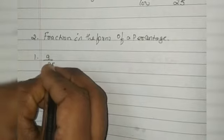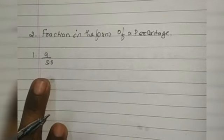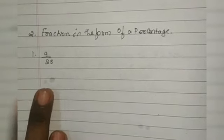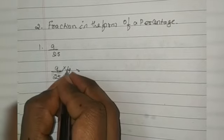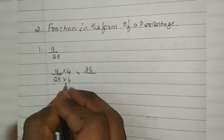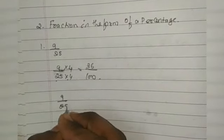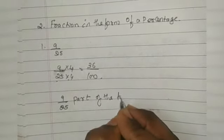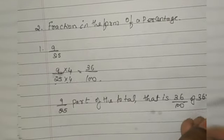If we are given a fraction, how do we find the percentage? We have 9 by 25. We need the denominator to be 100. If we multiply 25 by 4, it becomes 100. So we multiply both numerator and denominator by 4: 9 × 4 = 36, 25 × 4 = 100. So 9/25 equals 36/100, which is 36 percentage.